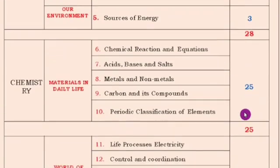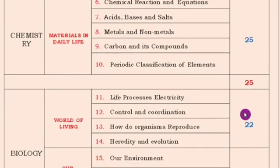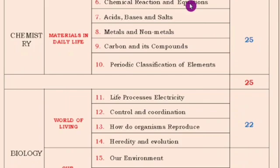Next comes chemistry, which is also very important. You will get 25 marks there and it is easy to score. All subjects are easy when you work hard — without hard work you cannot get anything. The first chemistry lesson is chemical reactions and equations. You must concentrate on how to write chemical reactions, the types of chemical reactions, and how they react. For that topic you will get 4 marks.